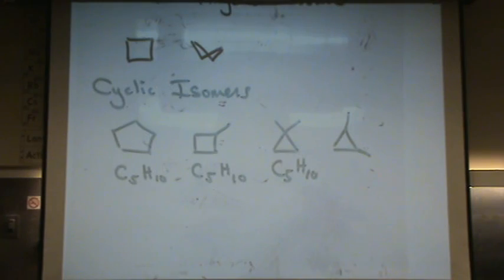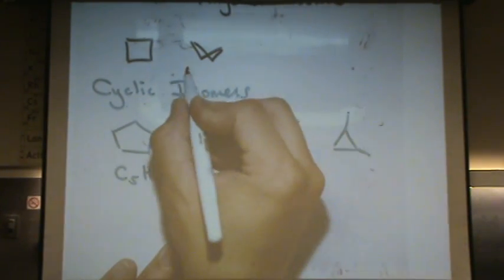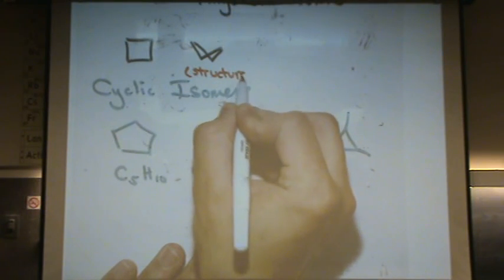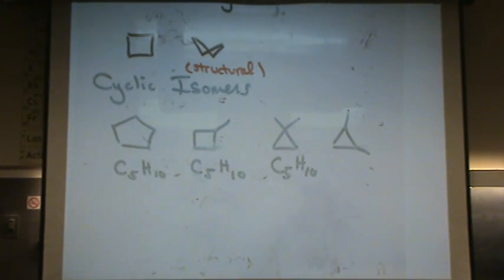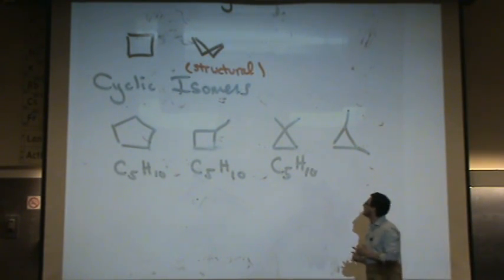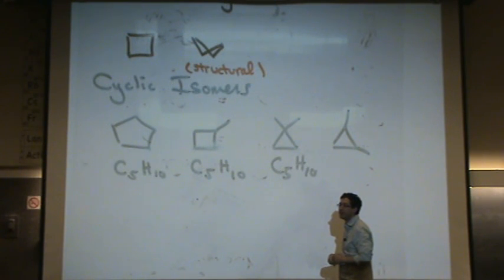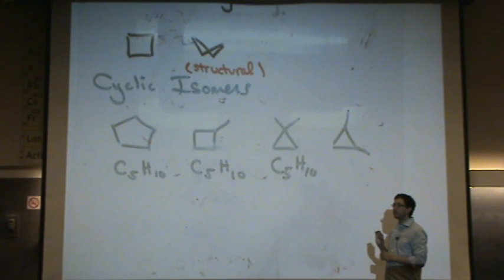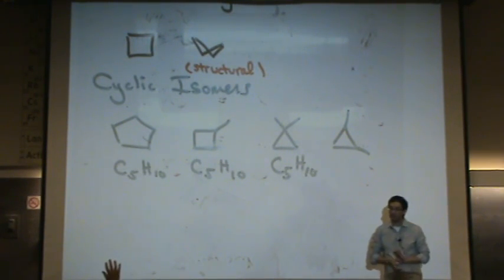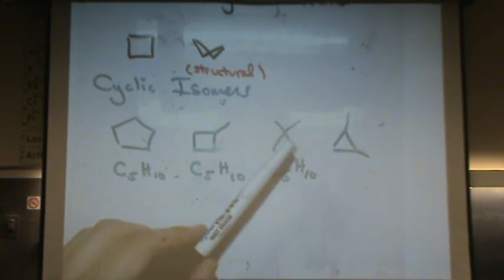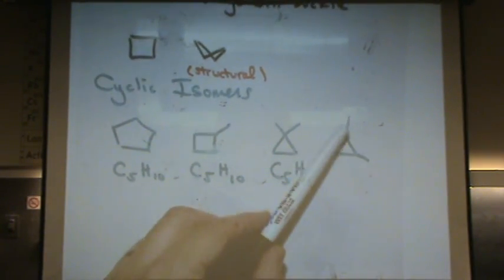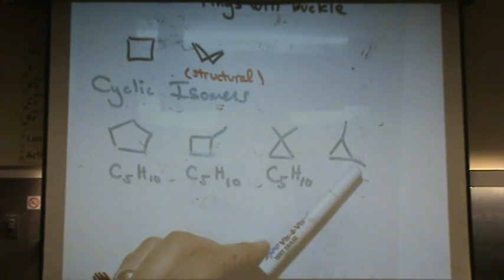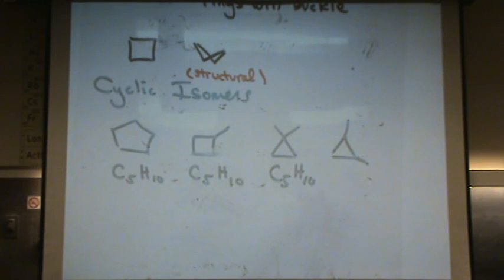These are — specifically called structural isomers. These are not resonance structures, because in this case I'm not moving electrons only — I'm moving carbons as well. Here I have two carbons on the top carbon; here I have a carbon on the top one and the right one. So when atoms actually move, that's called an isomer. When only electrons move, that's called a resonance structure.